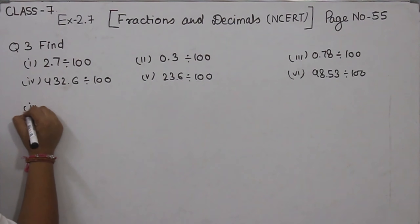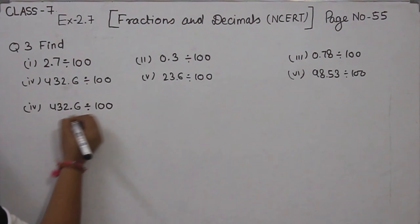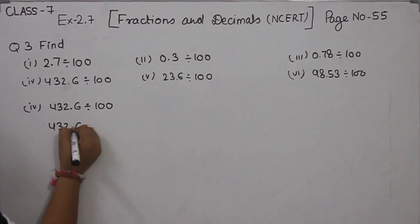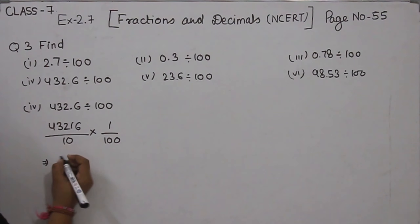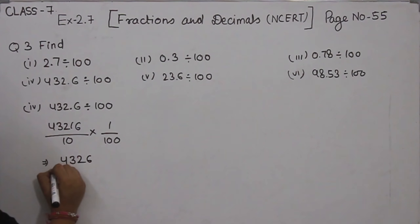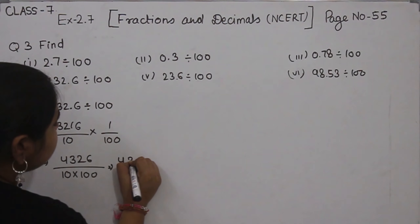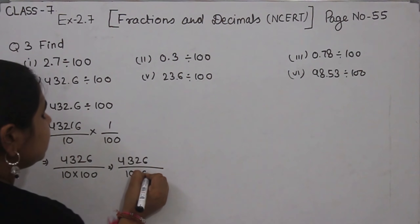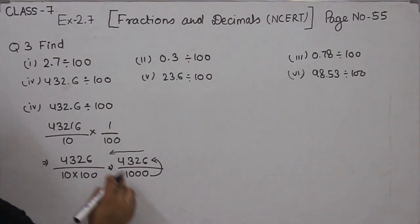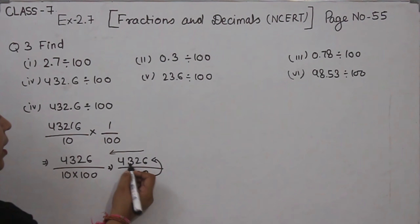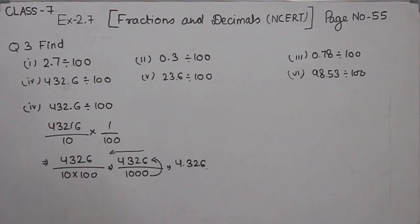Part 4: 432.6 divided by 100. First, we are going to remove the decimal. Now multiply 1 by 100. 4326 divided by 100, giving 4326 divided by 1000. We are going to convert these zeros to the decimal, putting the decimal from right to left after 3 digits — 1, 2 and 3 — so the answer is 4.326. This is Part 4.